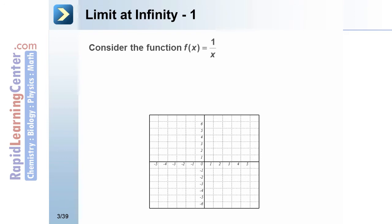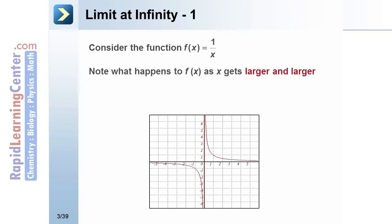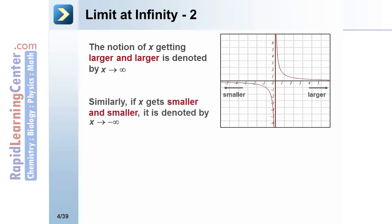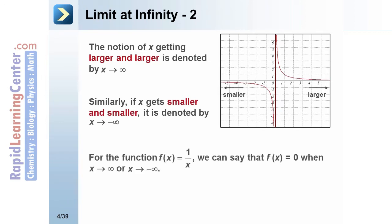Consider the function f(x) = 1/x. Note what happens to f(x) as x gets larger and larger. The larger the values of x get, the closer f(x) gets to 0. The notion of x getting larger and larger is denoted by x approaches infinity. Similarly, if x gets smaller and smaller, it's denoted by x approaching negative infinity. For f(x) = 1/x, we can say that f(x) equals 0 when x approaches infinity or when x approaches negative infinity.